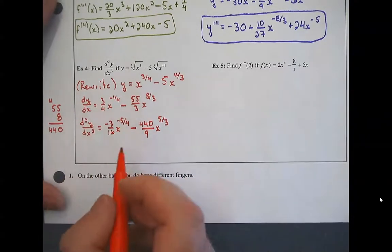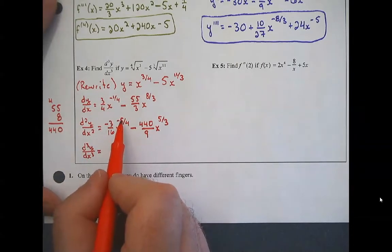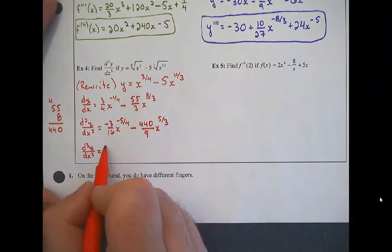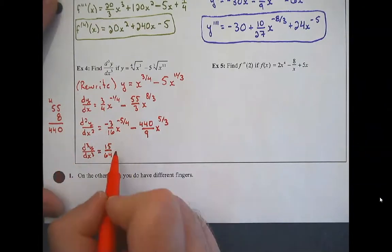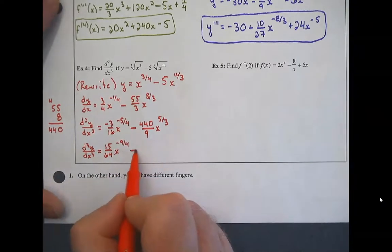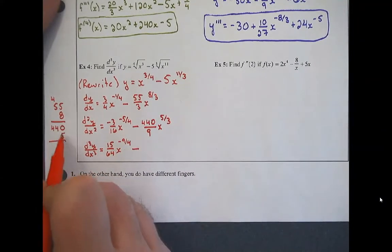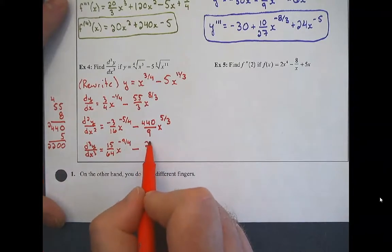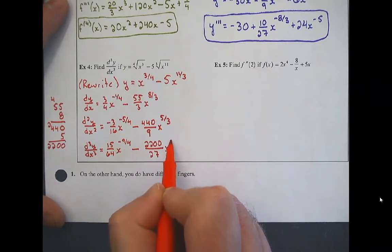The third derivative: five times three are both negative, giving positive fifteen over sixty-four — sixteen times four is sixty-four, done in the margin if needed; subtracting a fourth means subtracting four of those, giving negative nine-fourths. Then minus four hundred forty times five — working in the margin: zero, twenty, carry the two, twenty plus two is twenty-two, so two thousand two hundred over twenty-seven; subtracting three-thirds gives x to the two-thirds.